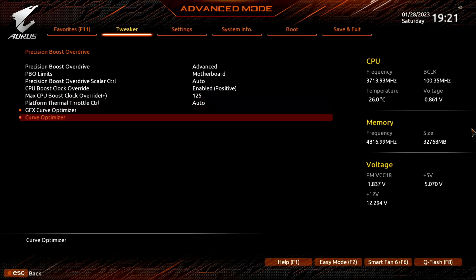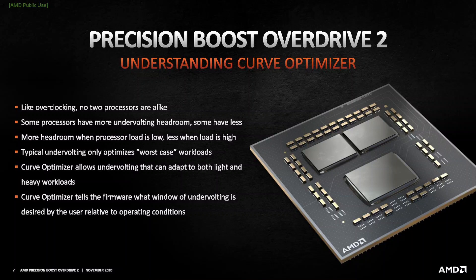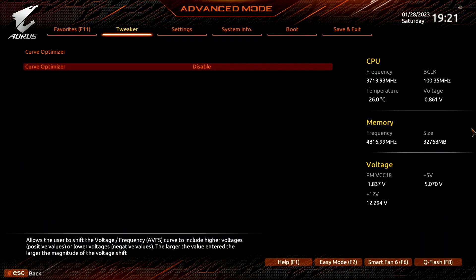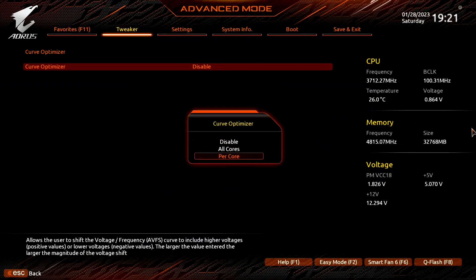Enter the Curve Optimizer submenu. Here's where the real magic happens, as Curve Optimizer allows us to adjust the voltage-frequency curve for each core of our CPU by up to 30 steps in a positive direction and up to 300 steps in a negative direction. Each step represents around 5 mV. Setting a negative curve means the CPU will use less voltage for a given frequency and boost to a higher frequency at a specific voltage. Set Curve Optimizer to per core.